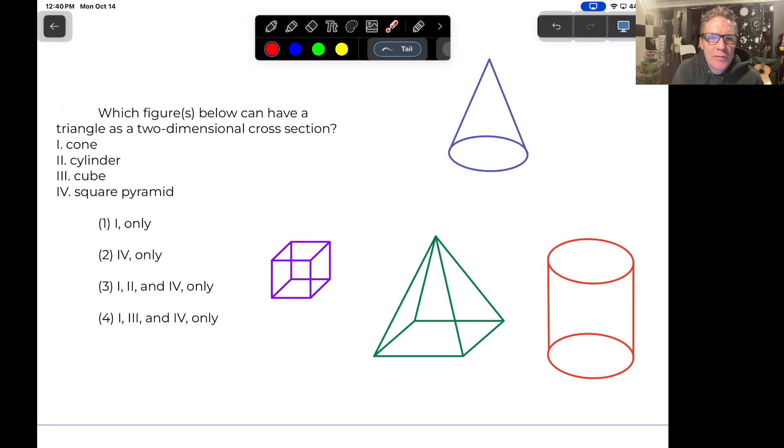Hey students, it's me, Mr. Fitz. So I just want to take a couple of minutes and go through this question here. Which figures below can have a triangle as a two-dimensional cross-section?